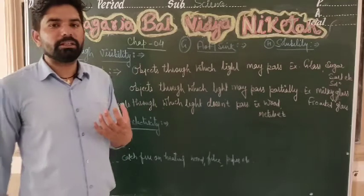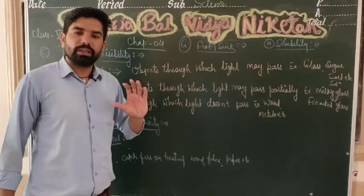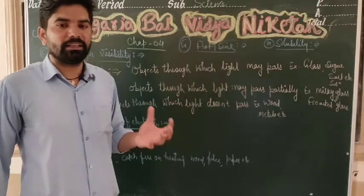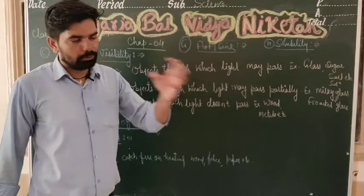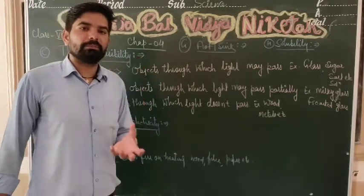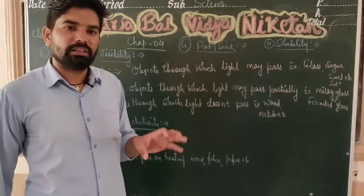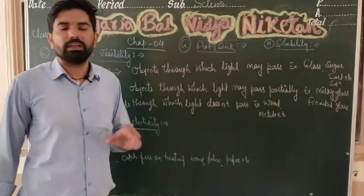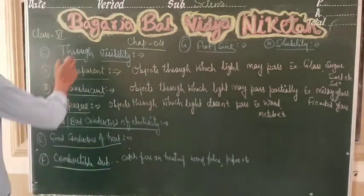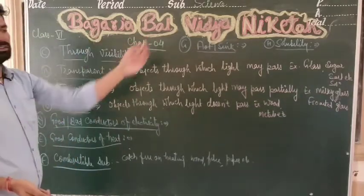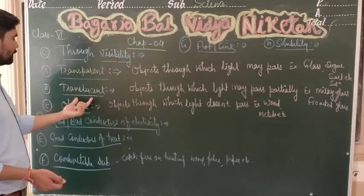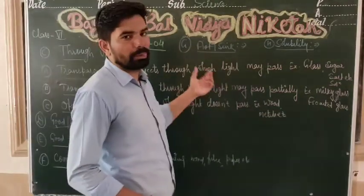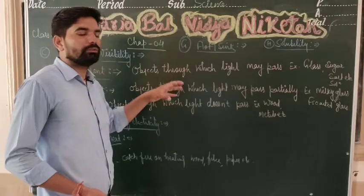Materials are categorized based on visibility — that is, how light passes through them. Some materials allow light to pass through, while some do not. The three main categories are: transparent materials, translucent materials, and opaque materials. Transparent materials are those through which full light passes completely.